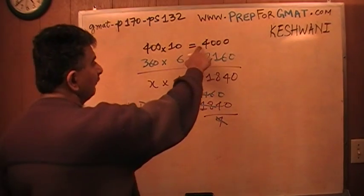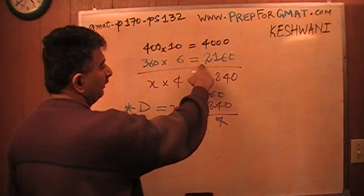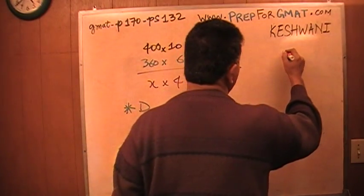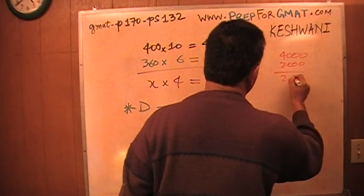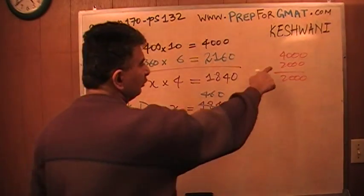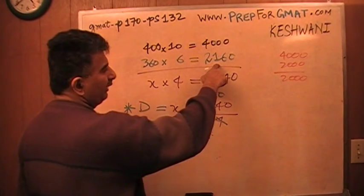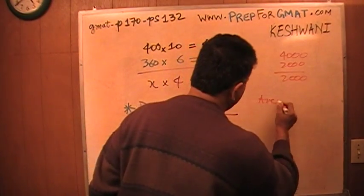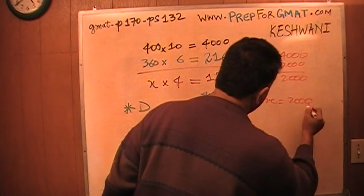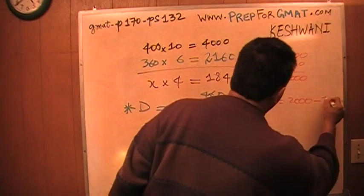Another way is to realize that this 4,000 minus 2,160 that we need has to be the same as... I know that 4,000 minus 2,000 is 2,000. That's very easy, but I'm not supposed to subtract 2,000. I'm supposed to subtract 2,160.